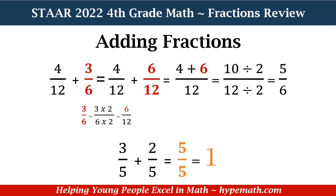Now let's look at another example. We have four-twelfths plus three-sixths. Whenever we're adding or subtracting fractions, our denominators must be the same. When we are adding and subtracting fractions, our denominators must be the same. So I need to change my denominator for three-sixths because it has a denominator of six and four-twelfths has one of twelve. In order to do that, I must find the least common multiple or least common denominator for twelve and six, and the answer is twelve.